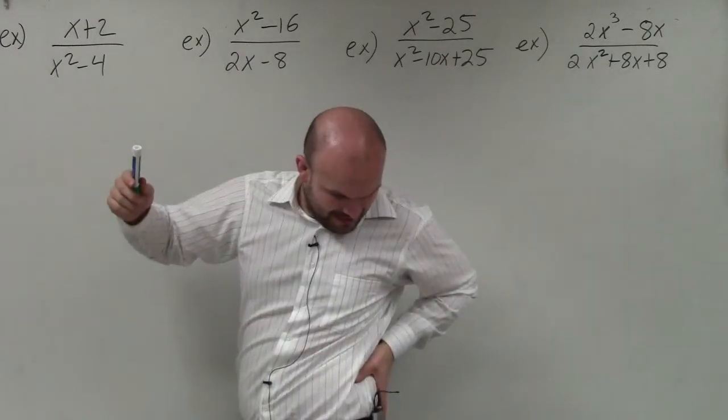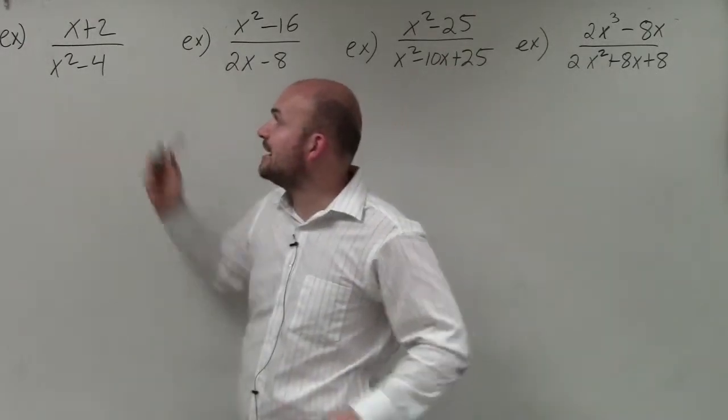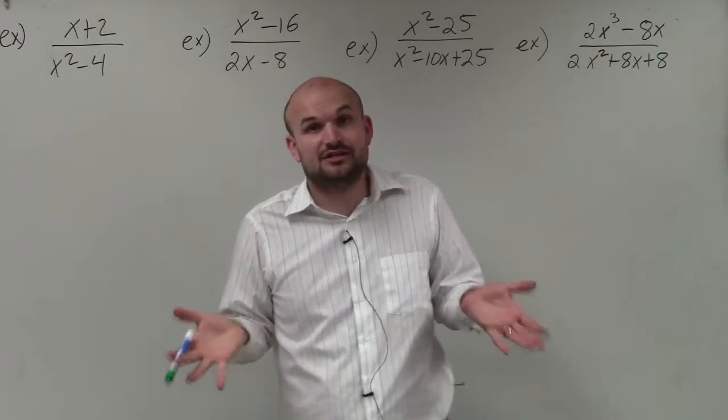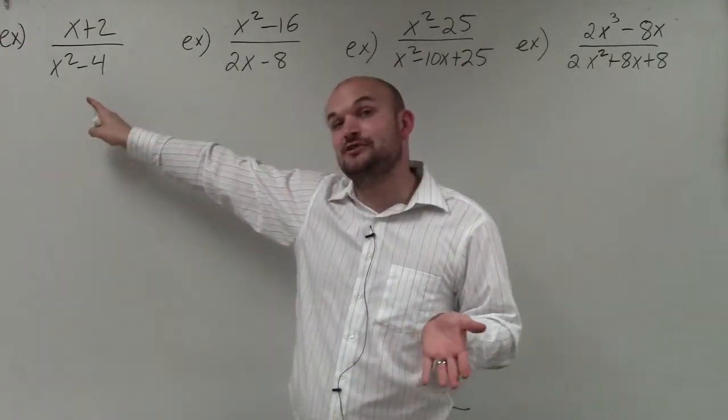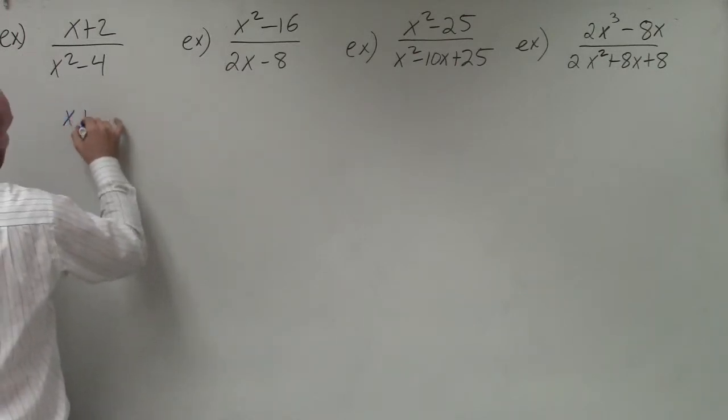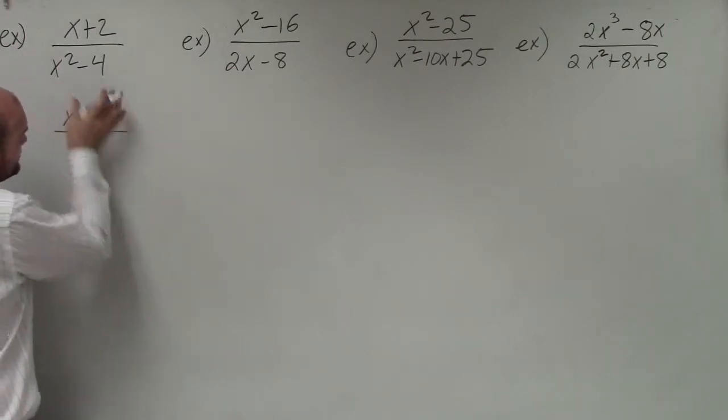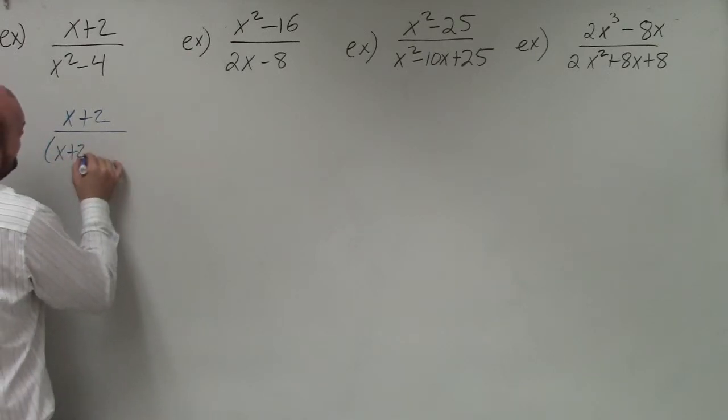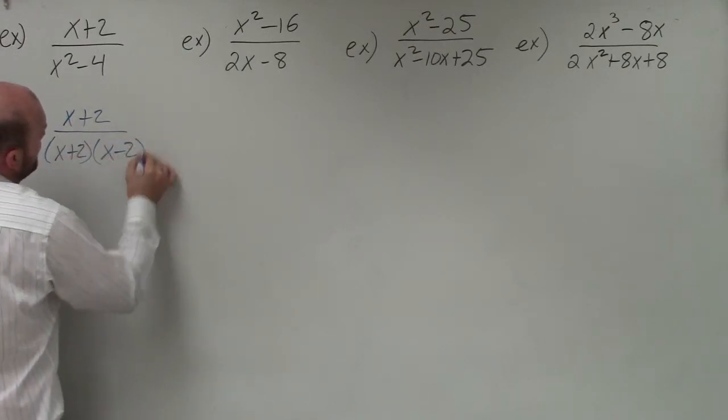However, in my denominator, you can see that I have x squared minus 4. I can't factor out a GCF. However, I can use the difference of two squares to factor this. So therefore, I'm going to have x plus 2 divided by, now, when I factor this using the difference of two squares, I'm going to have x plus 2 times x minus 2.